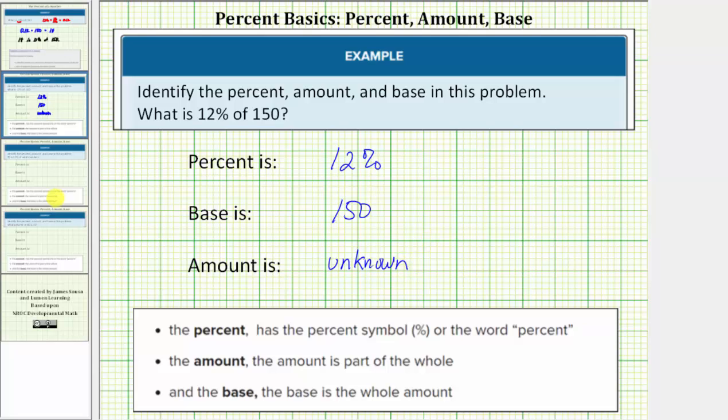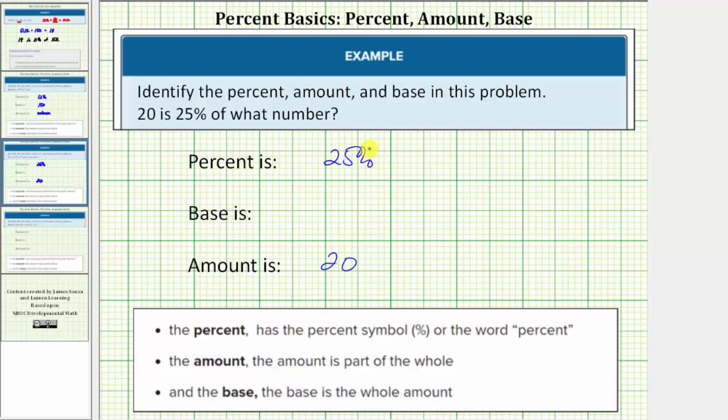Let's look at a second example. Here the question is 20 is 25% of what number? Because 20 is 25% or part of some whole amount, 20 is part of the whole or the amount. We're given the percent. The percent is 25%. And because 20 is some part or 25% of a number, the base or whole amount is unknown.